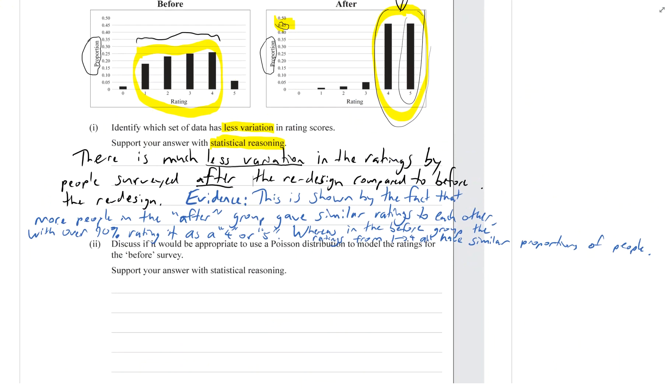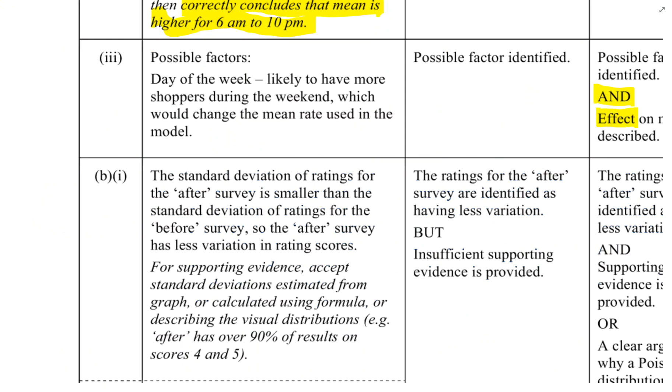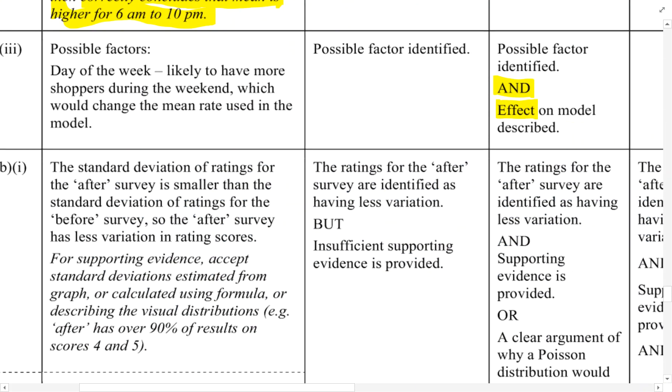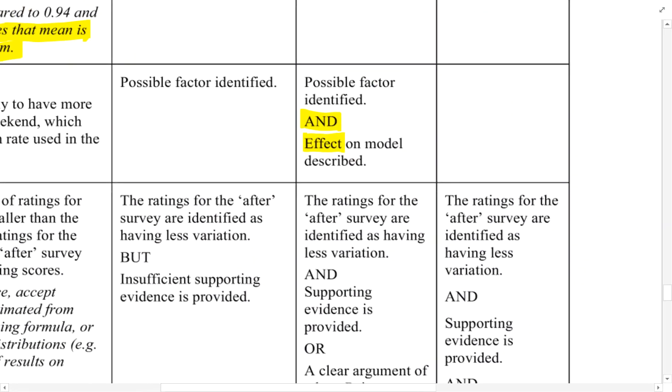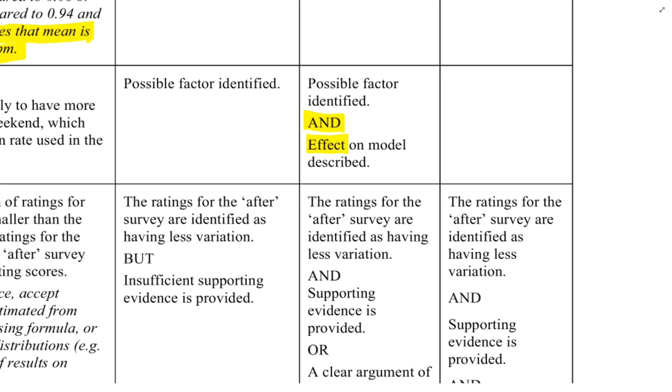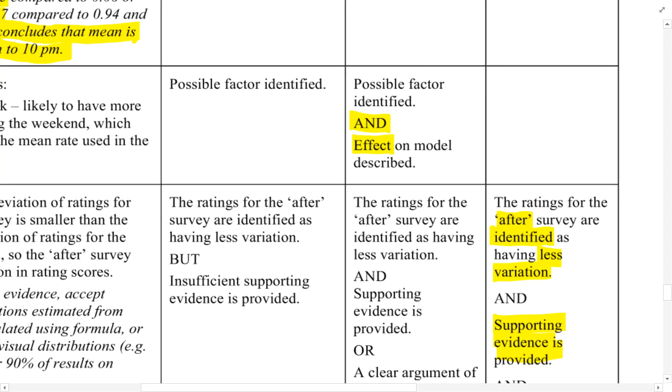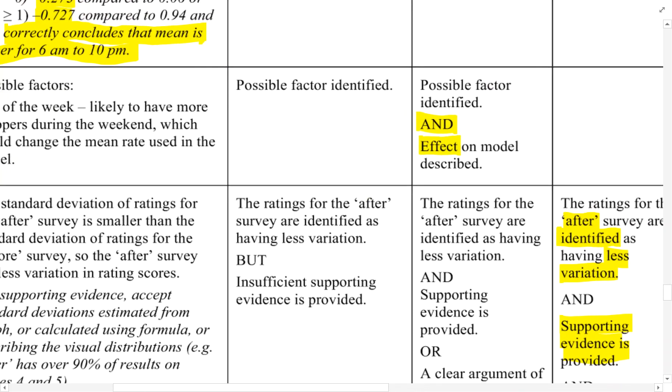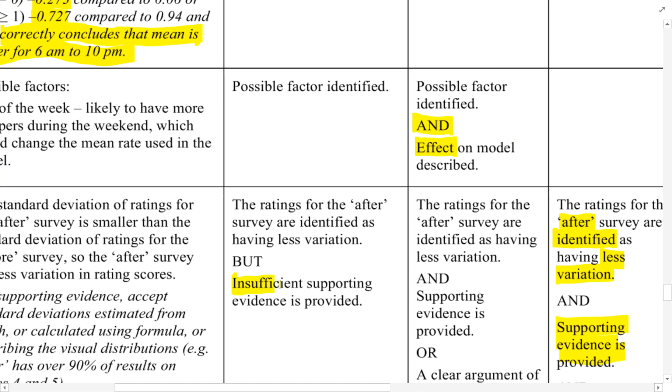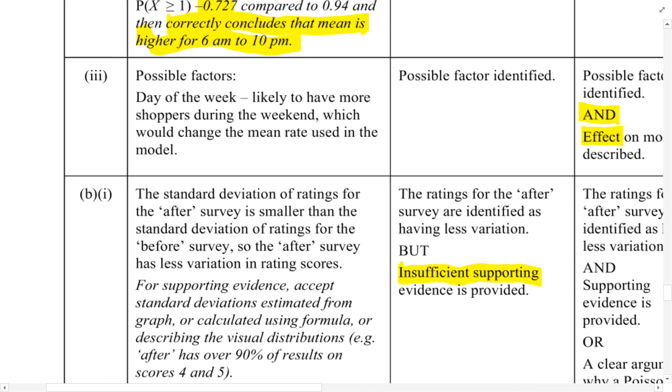We'll just look at the marking scheme for that question. For merit and excellence, because this is the first part of a two-part question, for excellence the ratings for the after survey must be identified as having less variation and supporting evidence is provided, and that's the same for merit as well. For achieved, you only get it if there's insufficient supporting evidence.